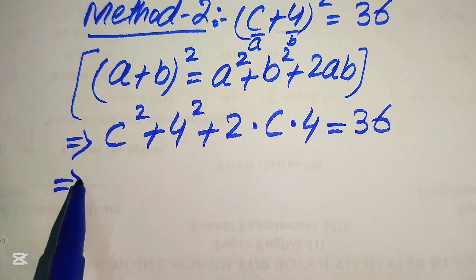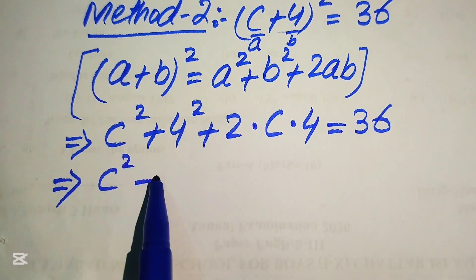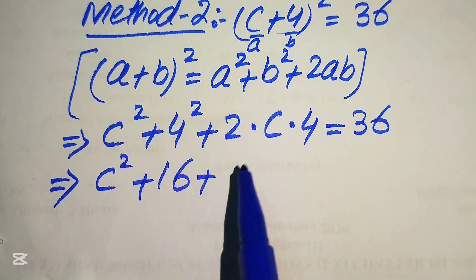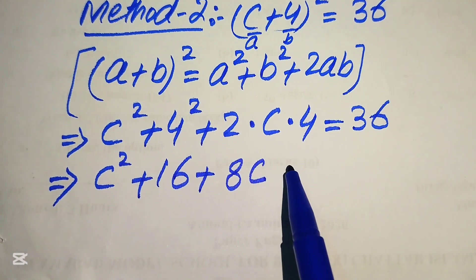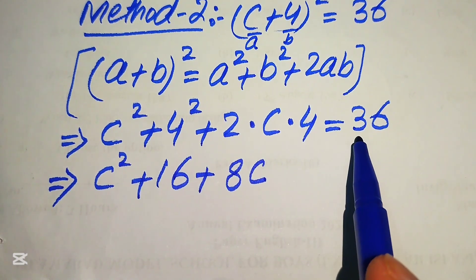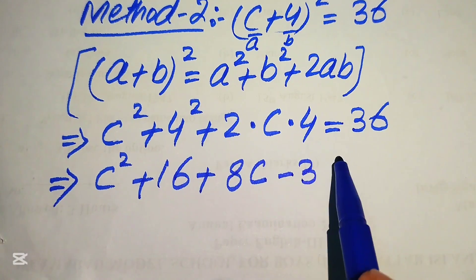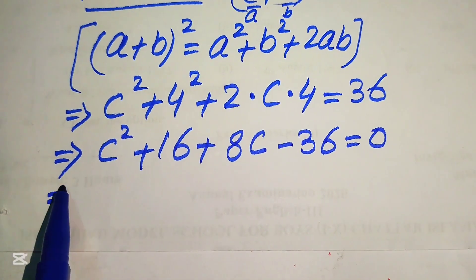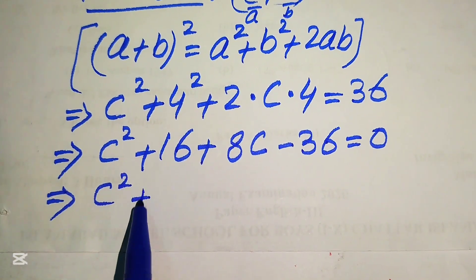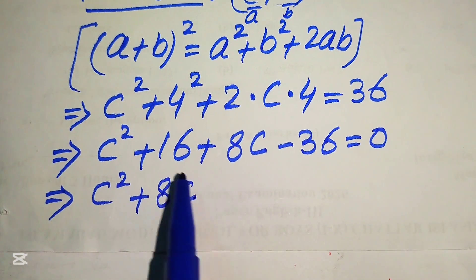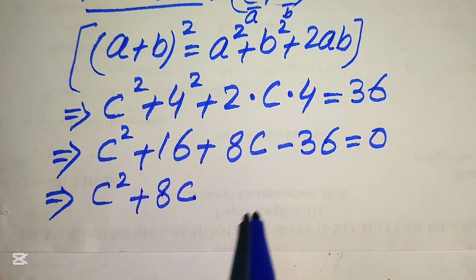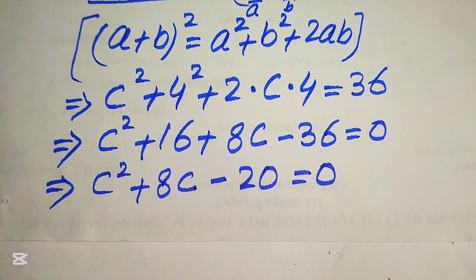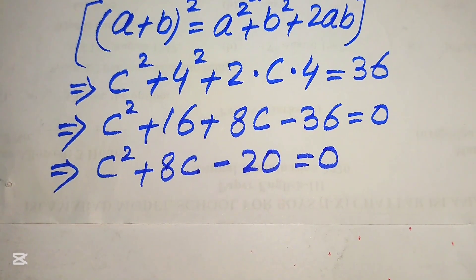Expanding, we write c square plus 4 square plus 2 times c times 4, equals 36. This gives c square plus 16 plus 8c equals 36. Moving 36 to the left hand side, we get c square plus 8c plus 16 minus 36 equals 0, which simplifies to c square plus 8c minus 20 equals 0.